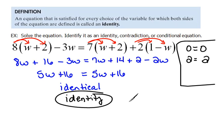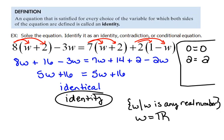as the set of all w's such that w is any real number, or you could write it simply as w equals r for any real number. Remember that funny r is how we would write the set of real numbers.